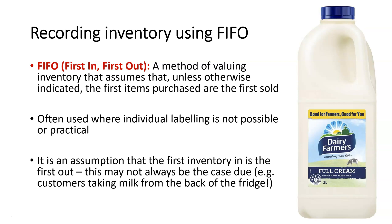First, we need to understand what this term is. FIFO is a method of valuing inventory that assumes that the first items that come into our business or are purchased are the first that we sell. This is often used as a method where individual labelling is not possible or practical. This is a different method that you might use if identified cost is not suitable. The important thing to know is that it is an assumption — we are assuming that this is happening, but that may not always be the case, and we'll talk about the limitations later on.